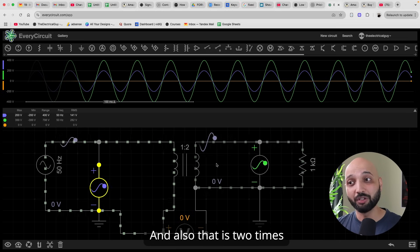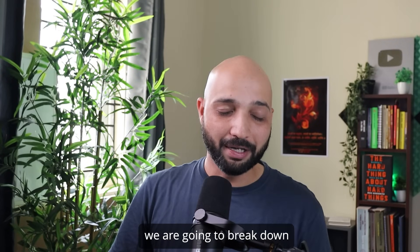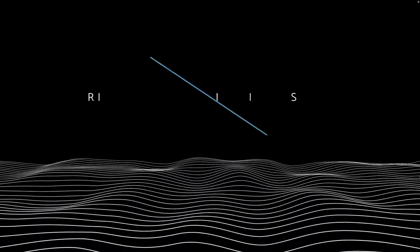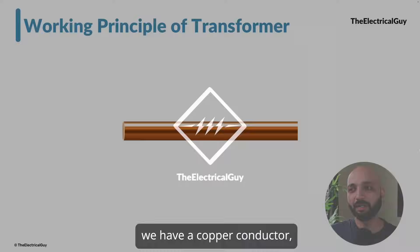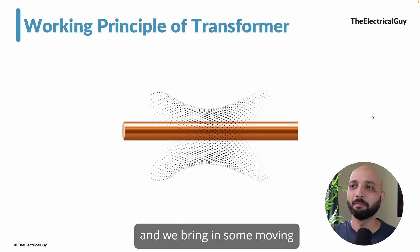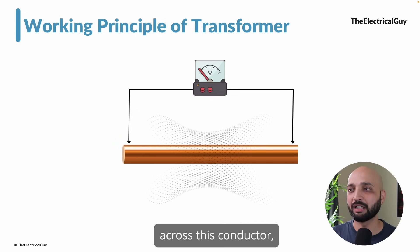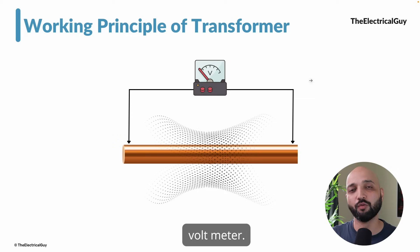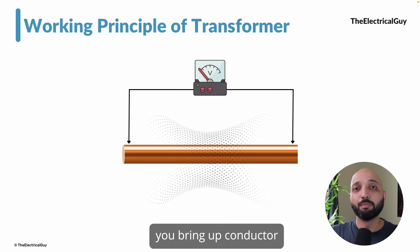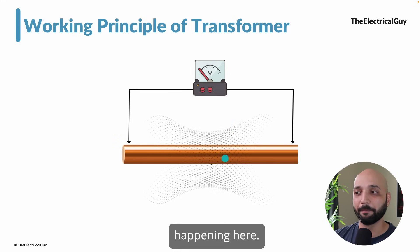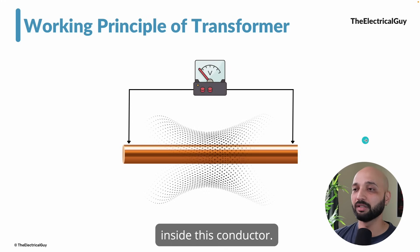So how is this device transforming voltage from one end to another without any physical connection between the two windings, and producing two times the voltage? In this video we'll break down the working principle of a transformer simply enough that even someone without an electrical background will understand. Imagine we have a copper conductor and we bring some moving flux near it. Because of this moving flux, a voltmeter connected across the conductor will measure a voltage — this is Faraday's law of electromagnetic induction. It states that whenever a conductor is in a rotating magnetic field, a voltage will be induced in that conductor.